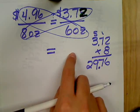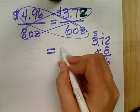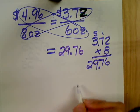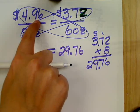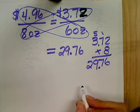And 2976 can go on either side. It doesn't matter. Okay, $29.76 there. Here, I'm going to multiply 496 times 6.